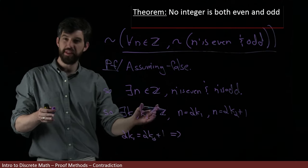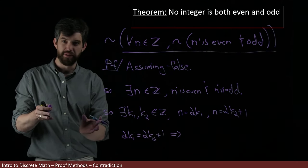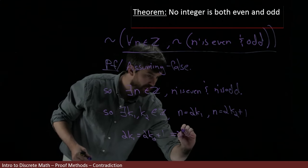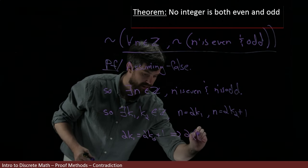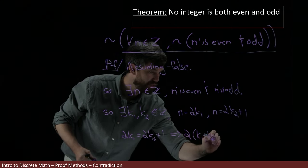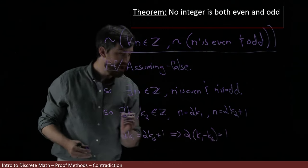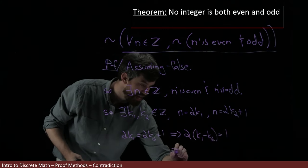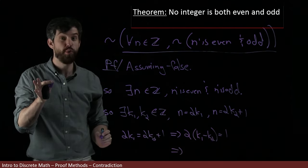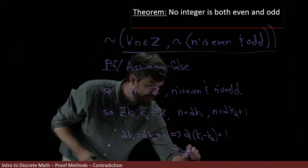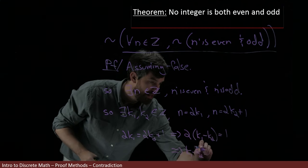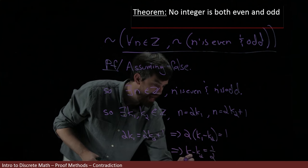And then moving the k2 to the other side and pulling out the 2, I get the formula twice k1 minus k2 is equal to 1. And finally, I'm going to divide out by 2. I'll show you why in a moment. I can divide out by 2 to get that this difference k1 minus k2 is equal to 1 half.